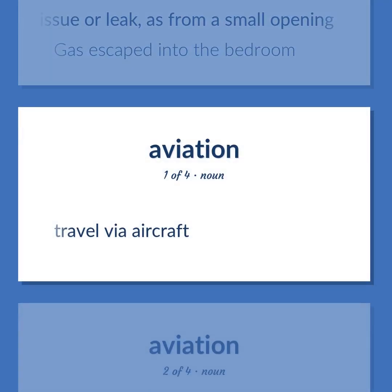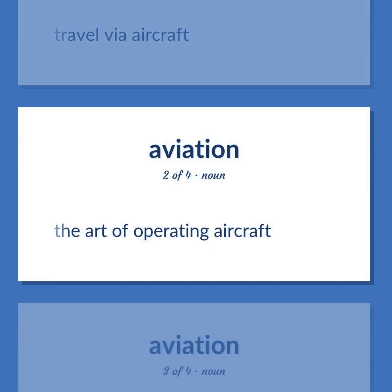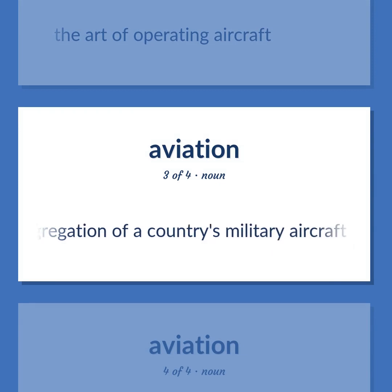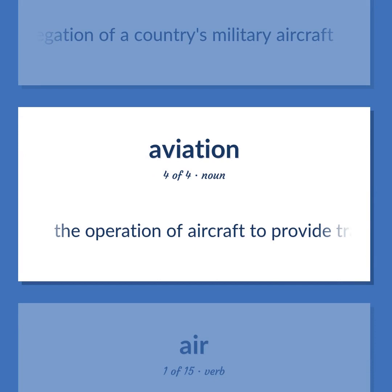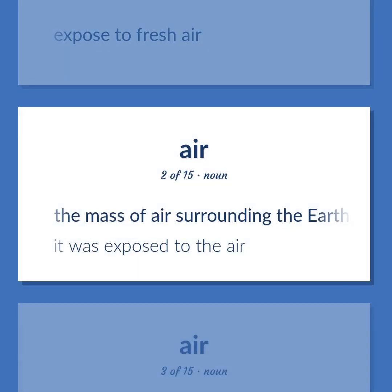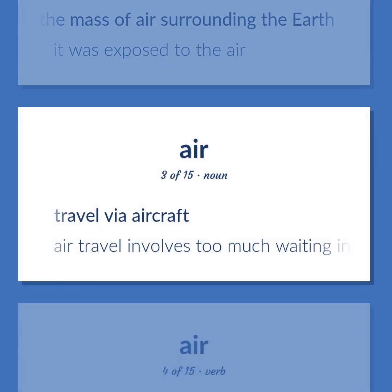Air: Travel via aircraft. The art of operating aircraft. The aggregation of a country's military aircraft. The operation of aircraft to provide transportation. Exposed to fresh air. The mass of air surrounding the earth — it was exposed to the air. Air travel involves too much waiting in airports.